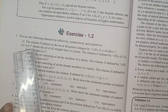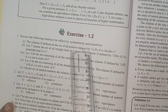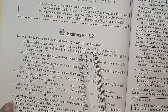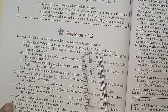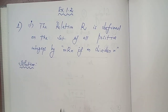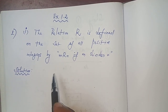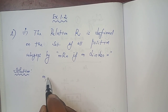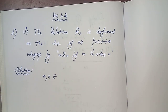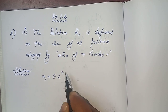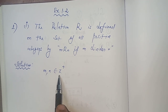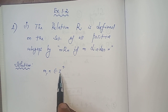Subdivision number one: the relation R is defined on the set of all positive integers by m is related to n if m divides n. Here m and n belong to the set of all positive integers, that is Z+. Z represents integers, and Z+ means positive integers — positive integers and natural numbers are the same.